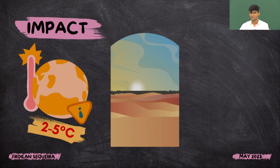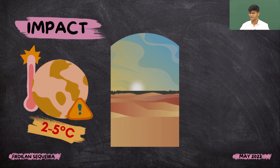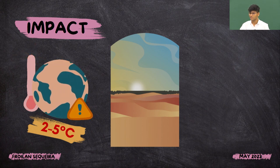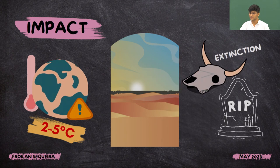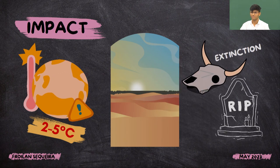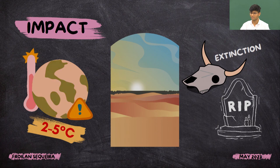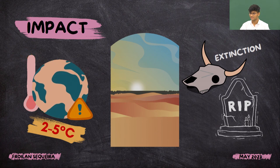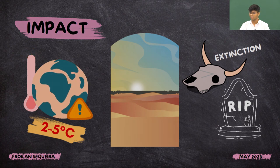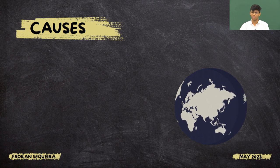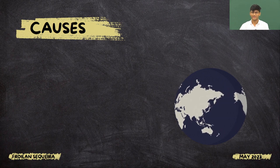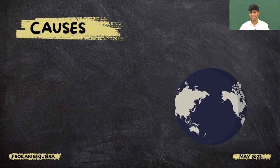This change in climate will make our weather more erratic. It will bring about deserts and droughts, forcing many species into extinction, which will make life much harder for all of us. But the important question is: what causes global warming? Why is this heating happening?